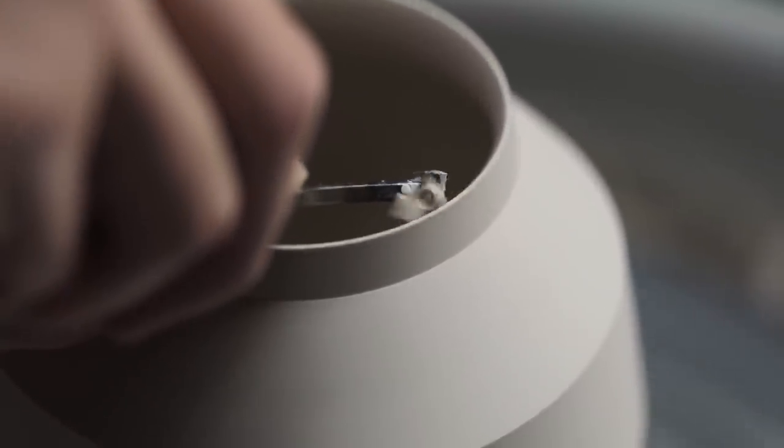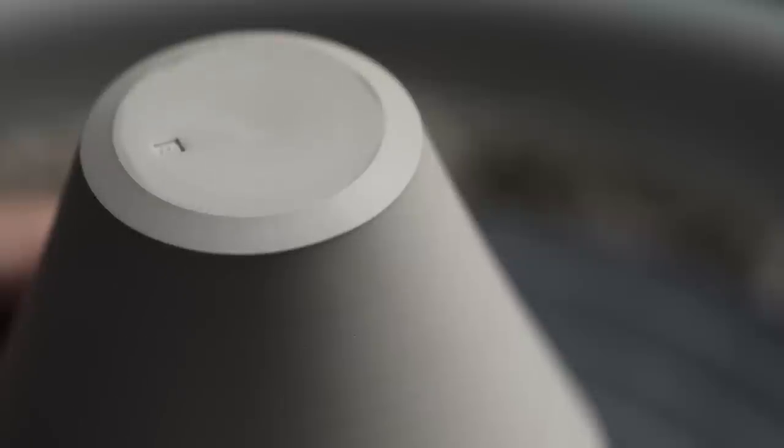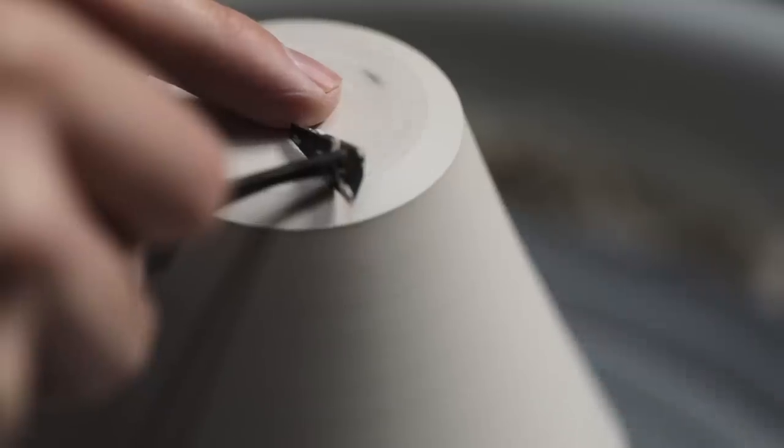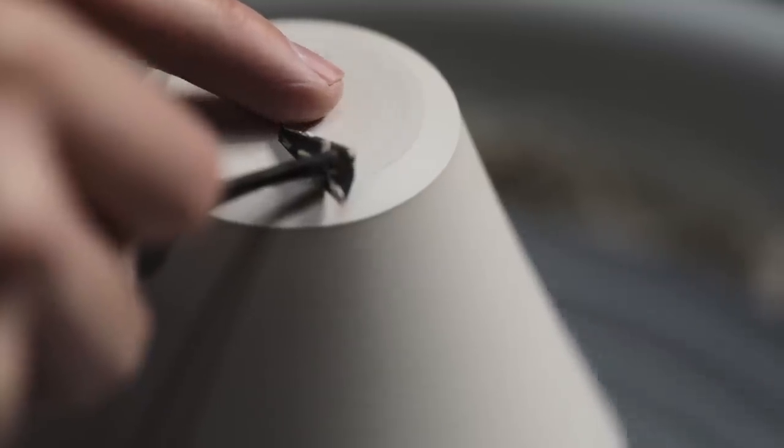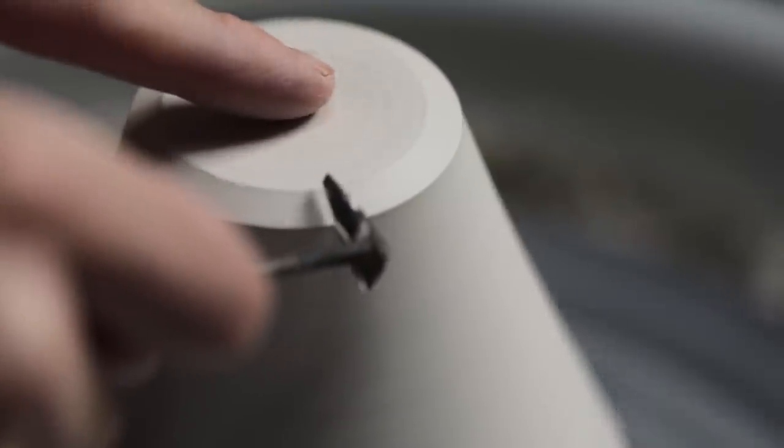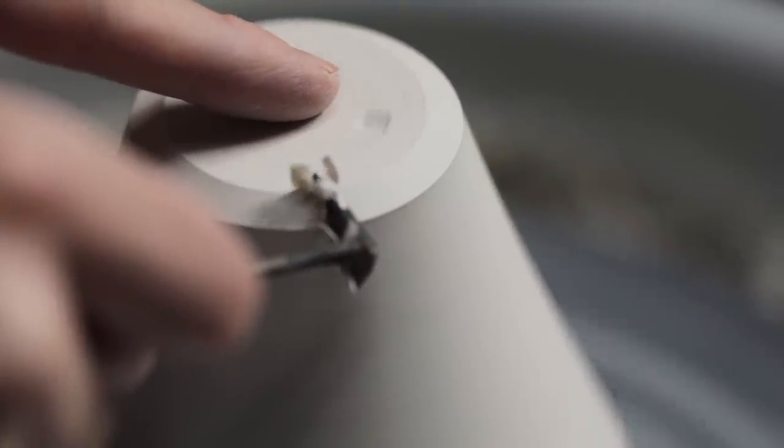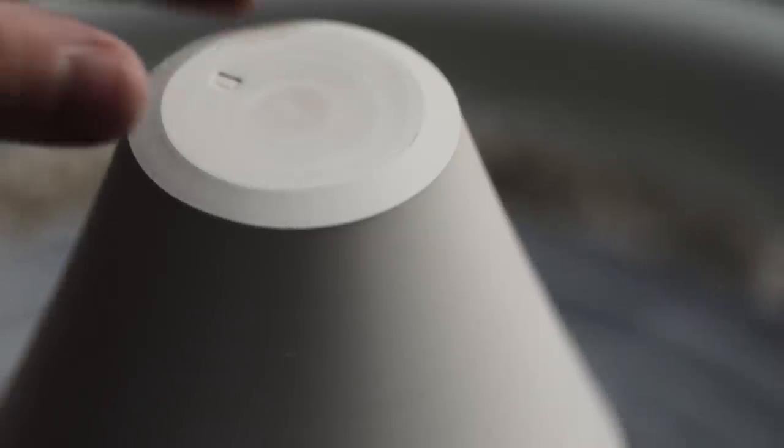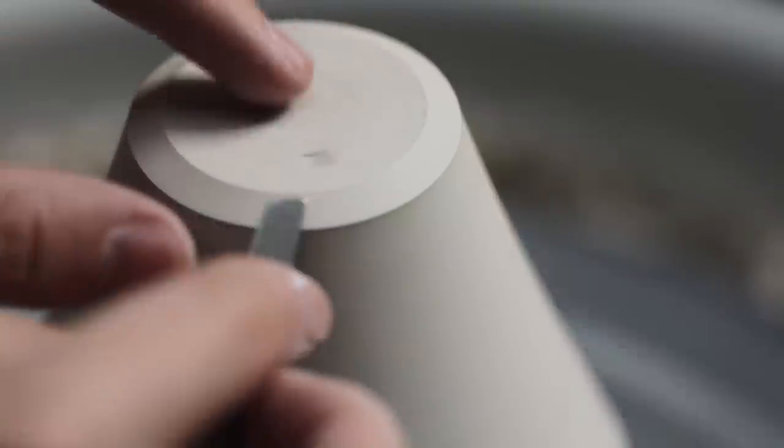I knew this process would cause the base to be discolored slightly, just around the edge, so I flipped the pot back upside down and just turned that part away. And at the same time, I used the handle of my turning tool to burnish the bevel really smooth.